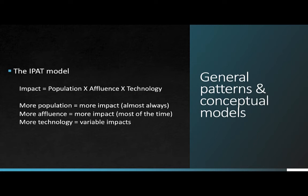The population part of that is pretty straightforward — more people almost always means more impact. The affluence part is also relatively straightforward, because in general, the wealthier a person or a nation is, the more impact they will have.